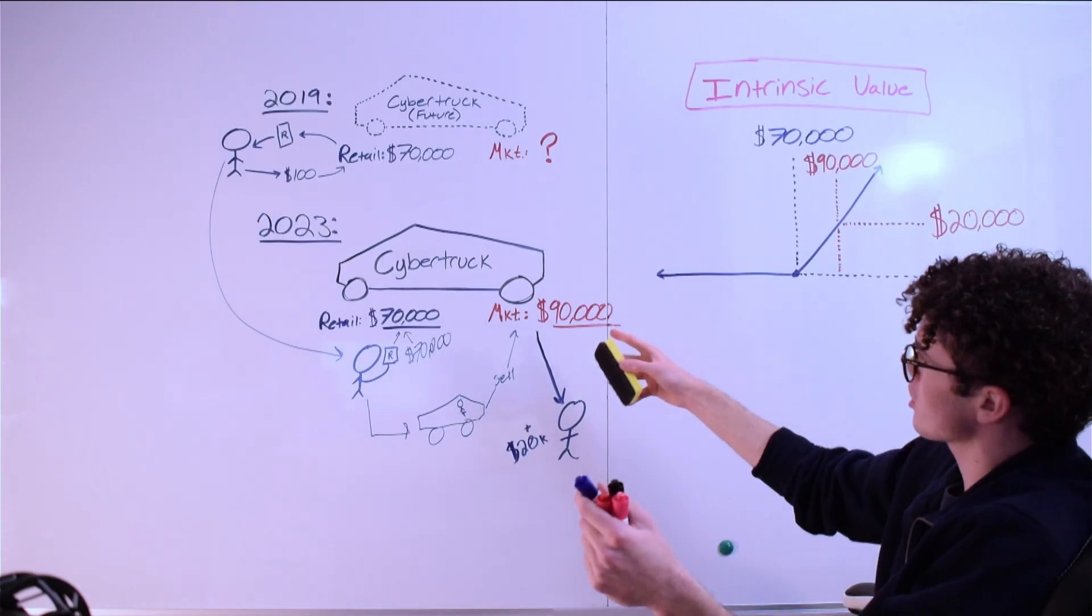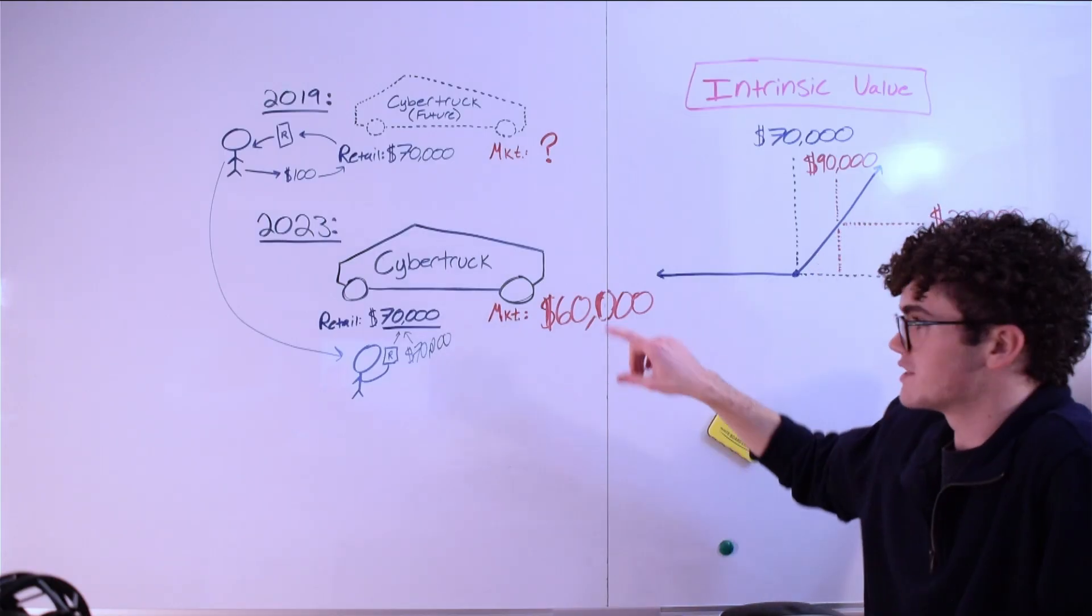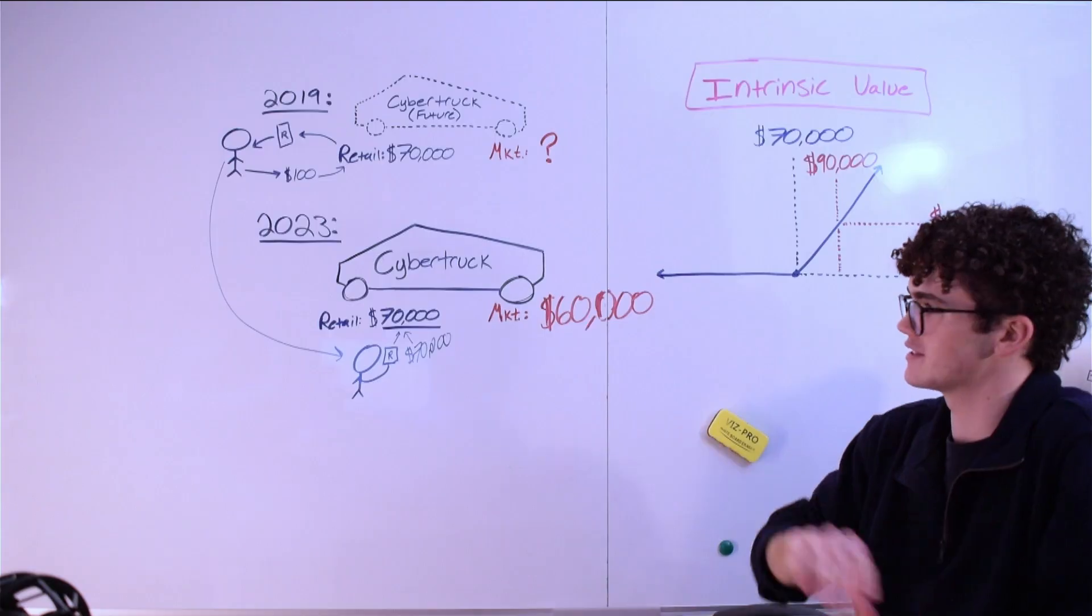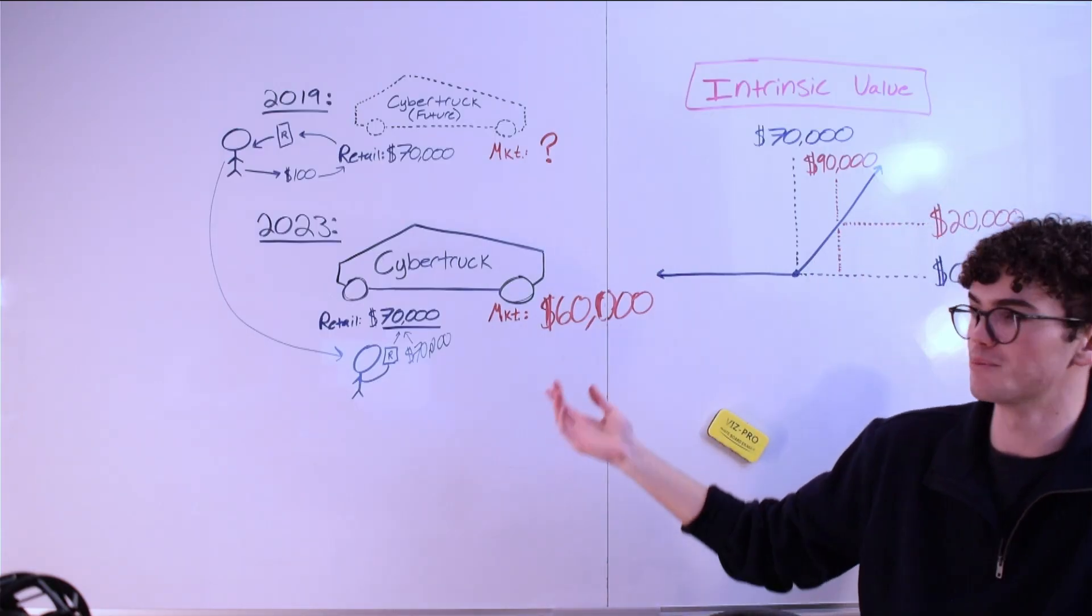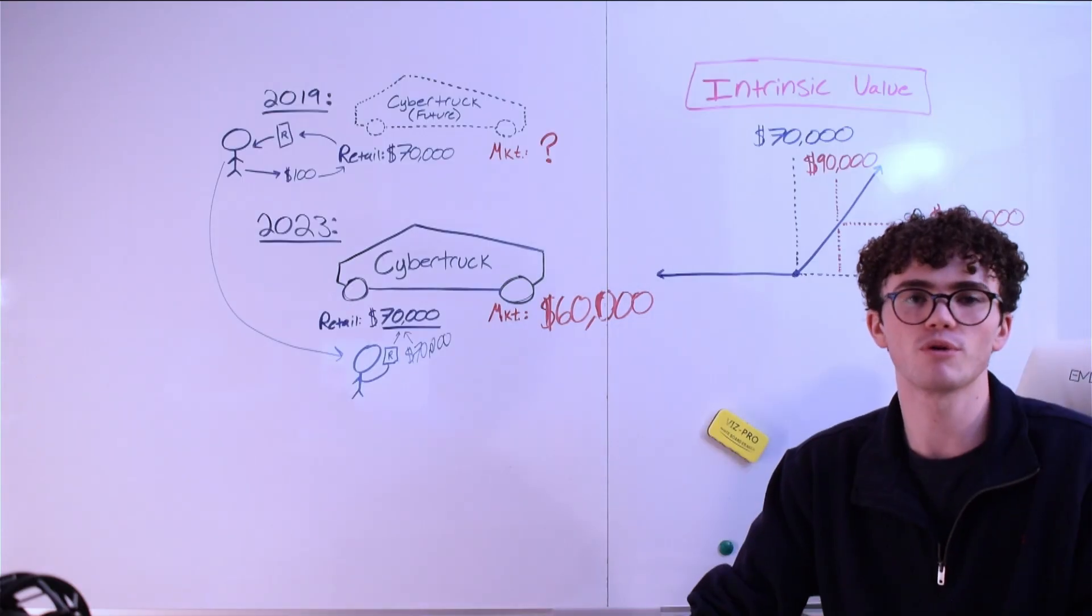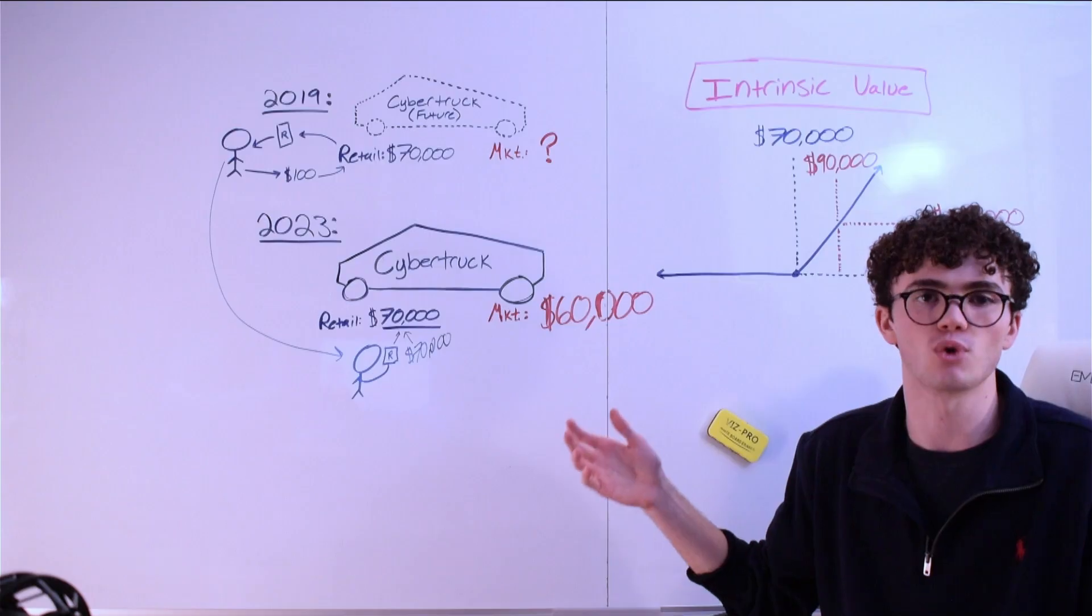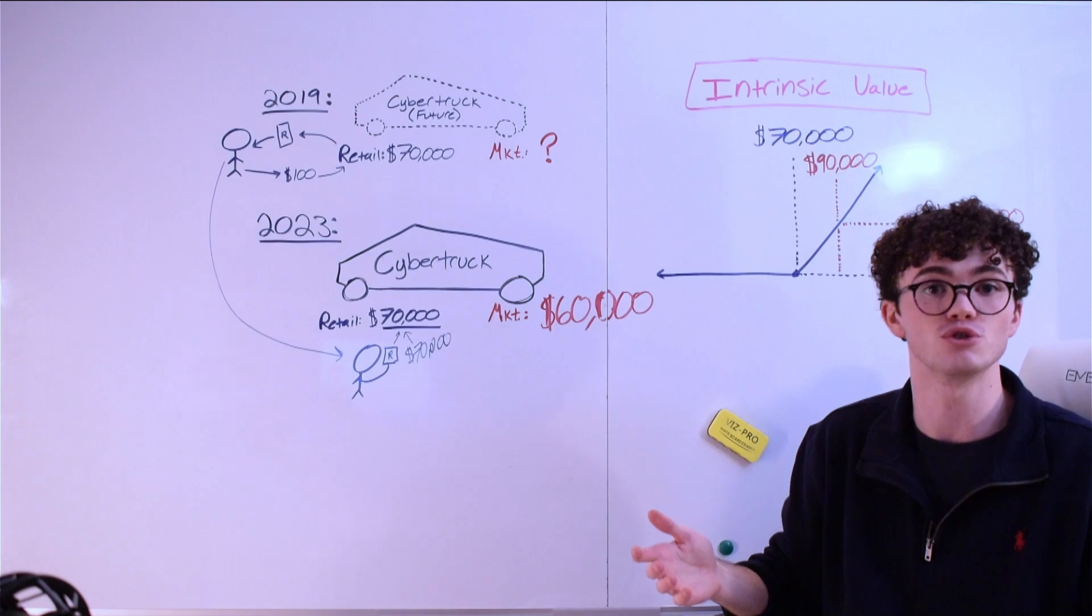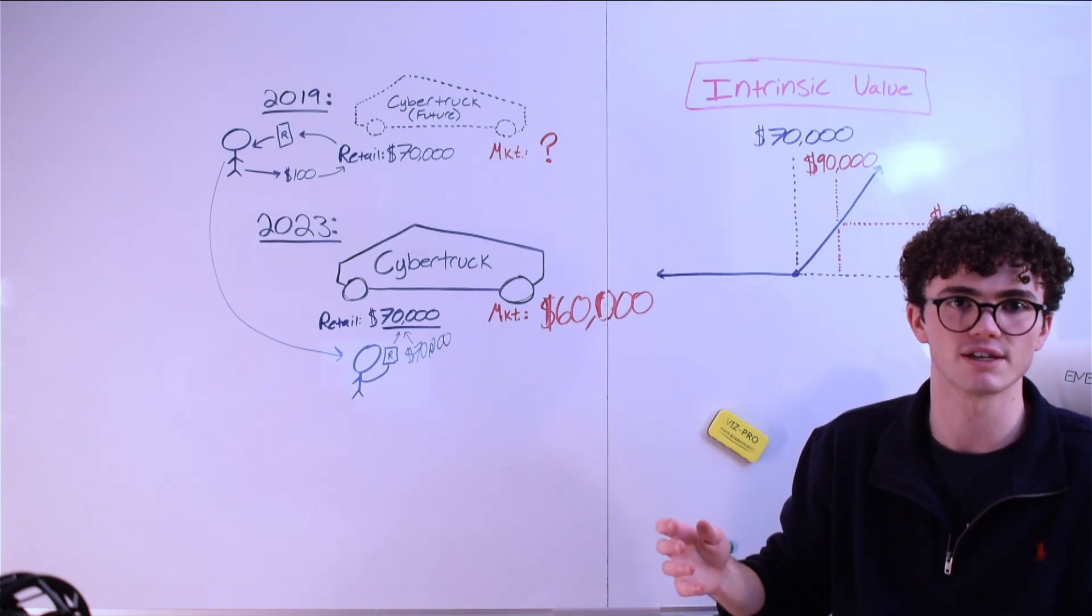But what if when the Cybertruck came out, the market value was $60,000? If the market value of the car is $60,000 when it's released, does it make any sense for me to exercise this option and buy the car for 70 grand from Tesla when I can get on Carvana and buy it for $10,000 cheaper? No, that wouldn't make any sense for me. Why would I pay $10,000 more than I have to? It wouldn't make sense for anybody to exercise this contract and buy the car for more than it's actually worth. So the contract itself is useless. Its intrinsic value is $0. I can make no money by exercising it.